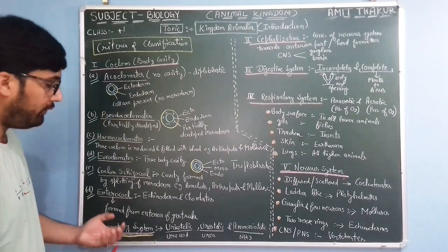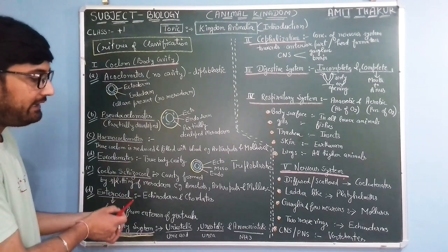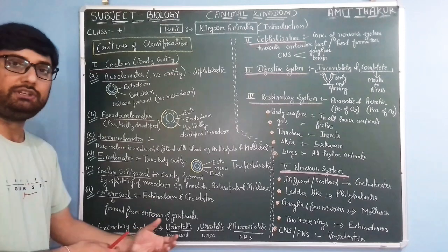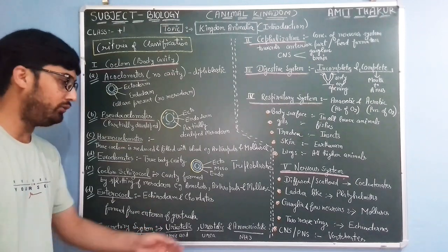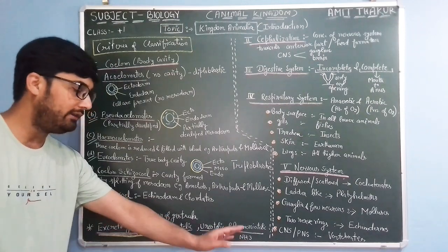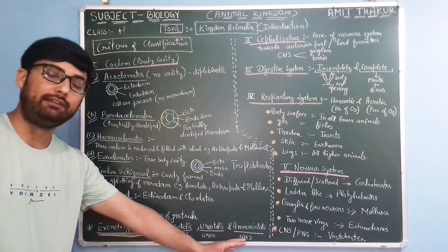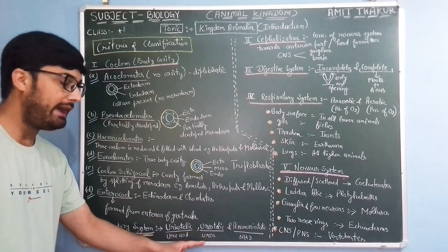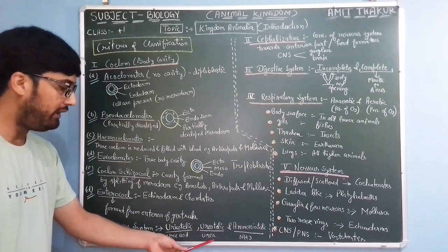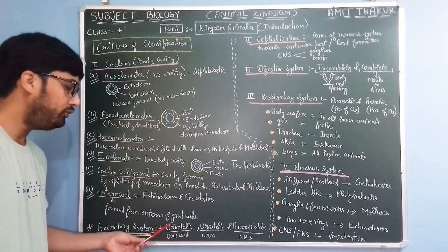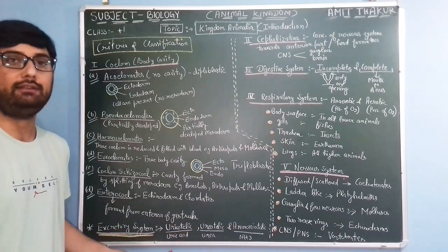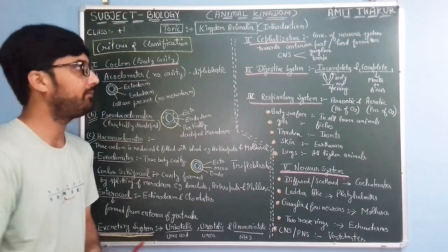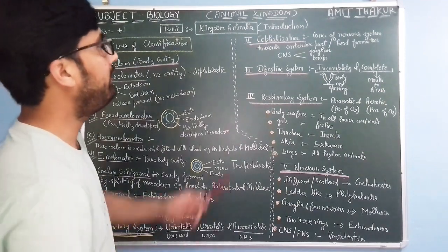So on the basis of their excretory material, we have differentiated animals into ammonotelic — ammonia as excretory product — ureotelic — urea as excretory product — and uricotelic — uric acid as excretory product.